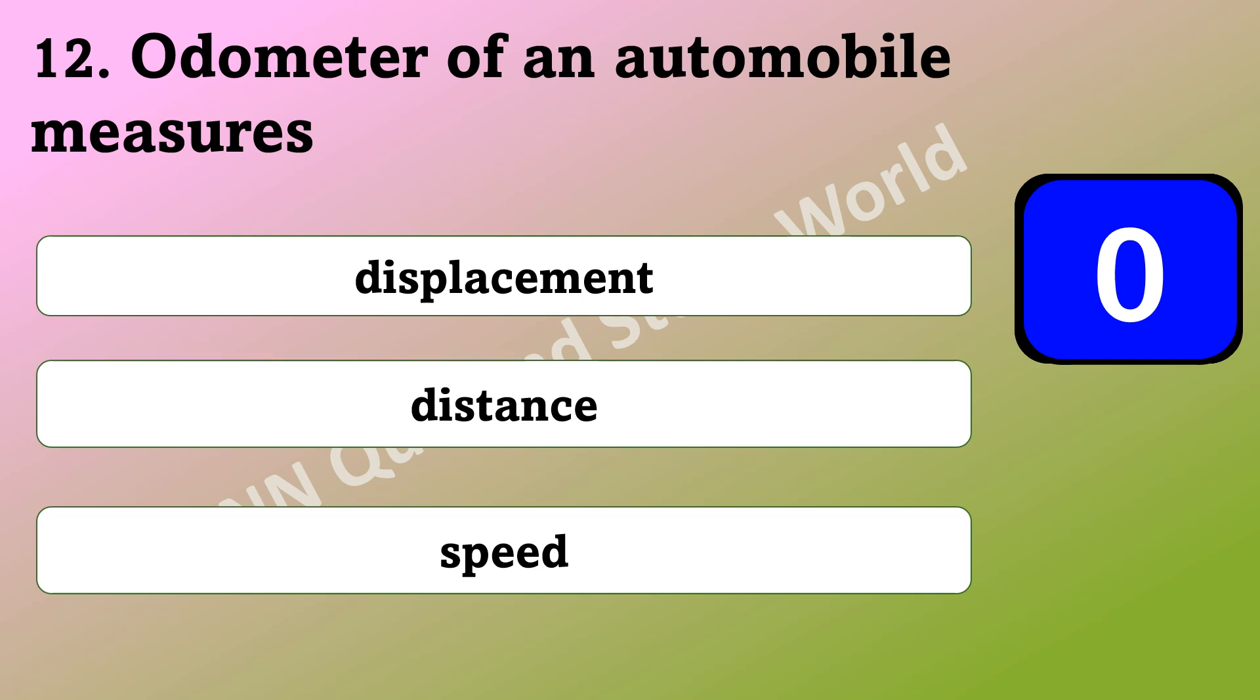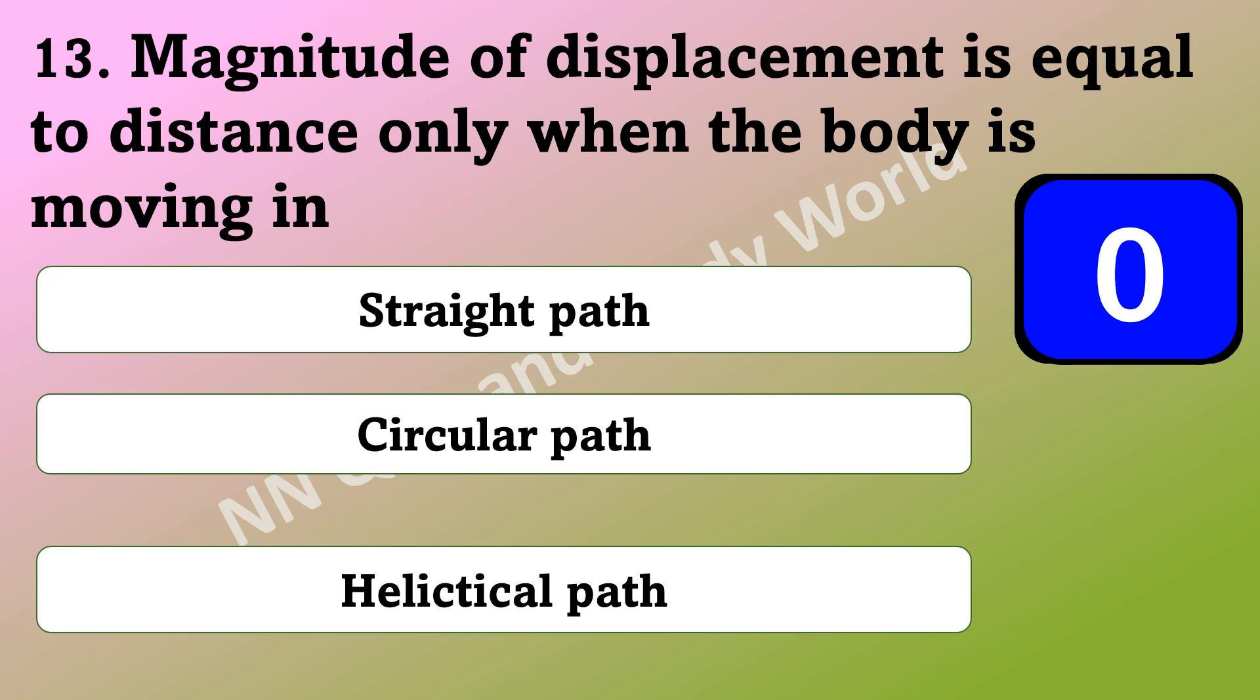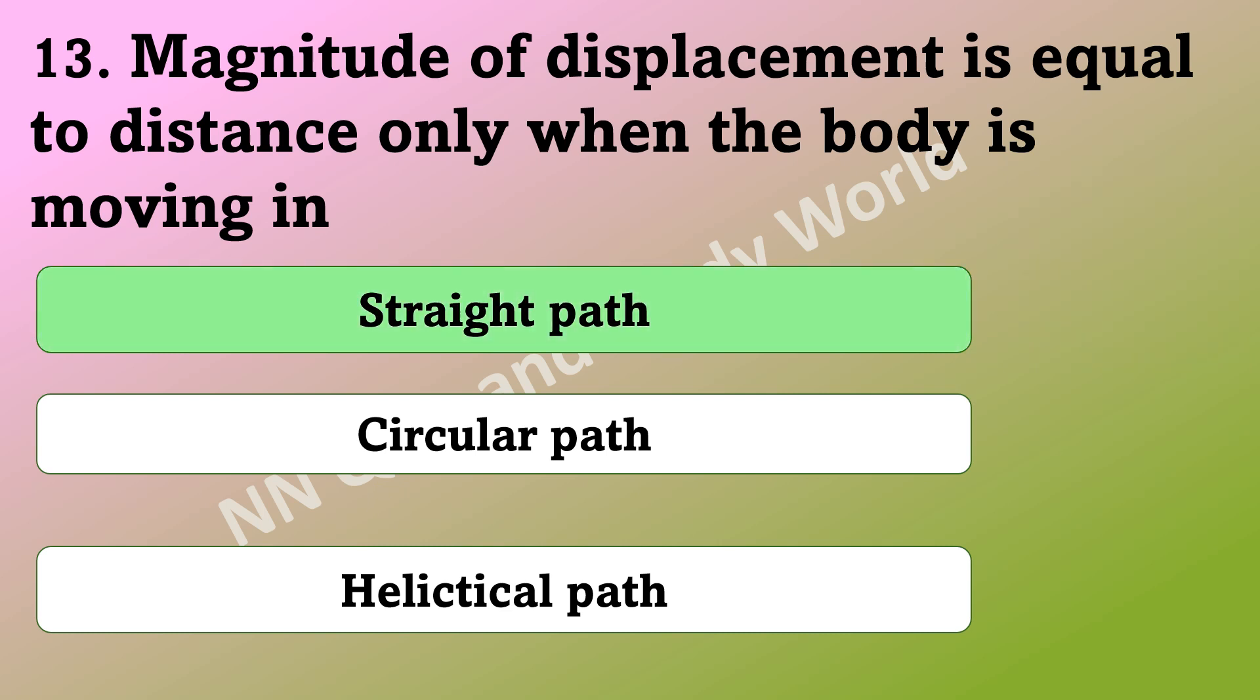What does an odometer of an automobile measure? Is it displacement, distance, or speed? The answer is distance. When is the magnitude of displacement equal to the distance? Is it when the body is moving through a straight path, circular path, or helictical path? The answer is when the body is moving through a straight path.